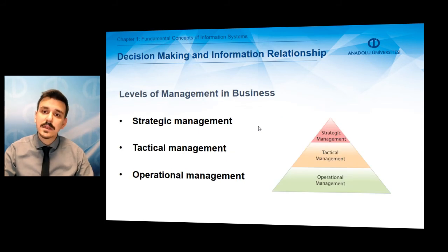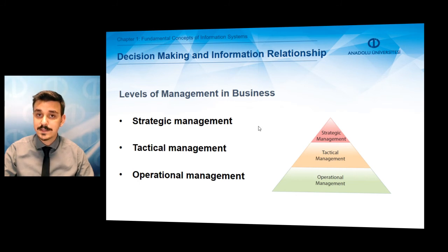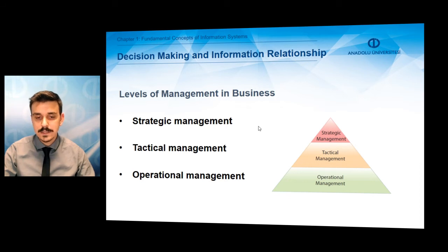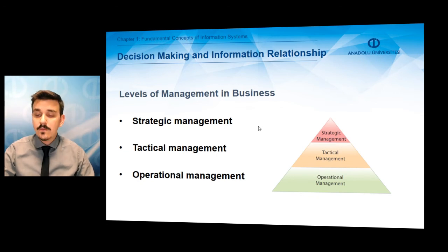In order to understand decision-making and information relationships in the business, we must also understand levels of management. There are three levels in management: strategic management, tactical management, and operational management. Those management levels have a hierarchy, and the relationship between these management levels is generally described with a pyramid, where strategic management is at the top, tactical management is at the middle, and operational management is at the bottom.